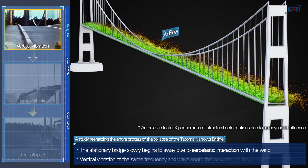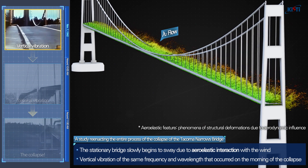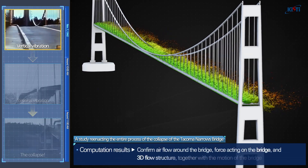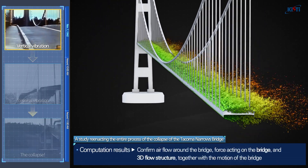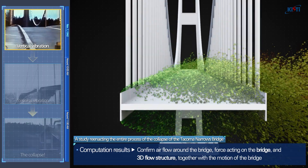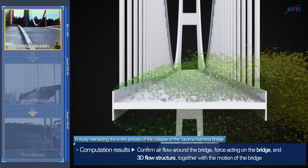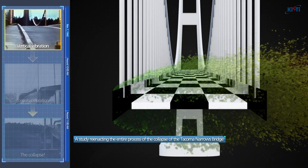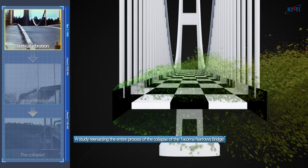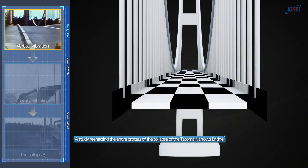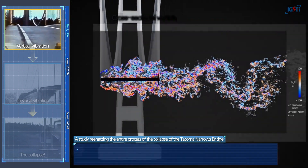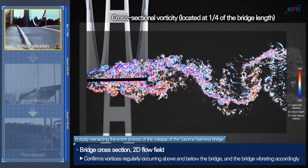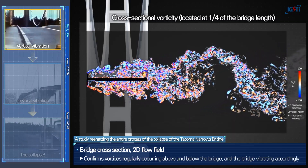These are vertical vibrations of the same frequency and wavelength that occurred on the morning of the collapse. Through the computation results, we were able to check the flow of air around the bridge, the force acting on the bridge, and the three-dimensional flow structure together with the motion of the bridge. Looking at the motion of the bridge from the front, you can clearly see the cross sections of the bridge vibrating vertically. If you look at the cross section of the bridge and the two-dimensional flow field, you can see how vortices periodically occur above and below the bridge and how the bridge sways accordingly.